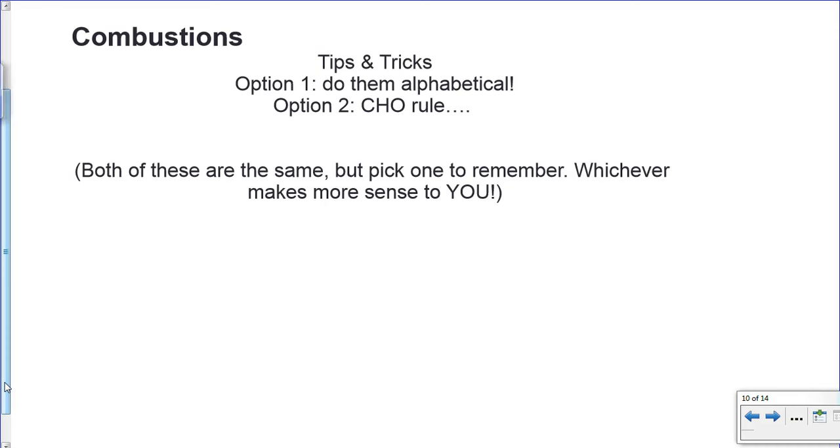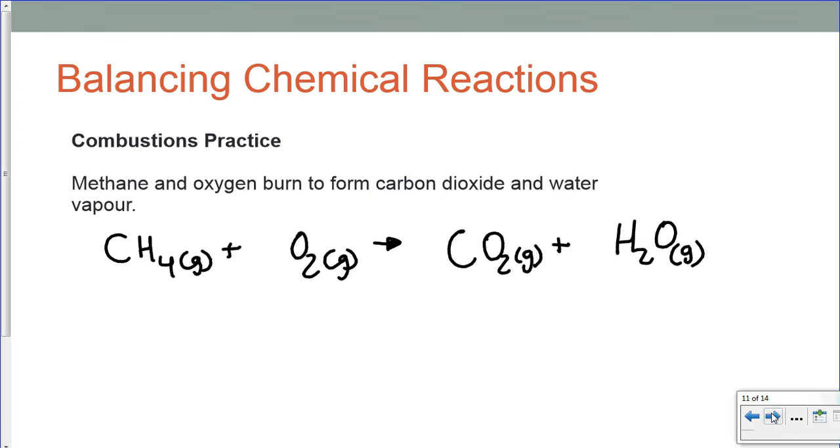Now, essentially, guys, this last one, go alphabetically under combustions, or some people call it a CHO rule because combustion deals with carbon, hydrogen, oxygen. Really, to make your life easy, pick one and run with it. We're not going to ask you to actually tell us which one you use, just use it. So, combustions of things like methane and oxygen burn to form carbon dioxide and water vapor. When we look at this, the first thing I'm going to balance is carbons. When I look over here, I have one carbon, so I'm going to look over here. How many carbons? One. I'm good. I'm done. This is always assuming that this guy here is a one to start. We assume it, but we might have to come back and change it later.